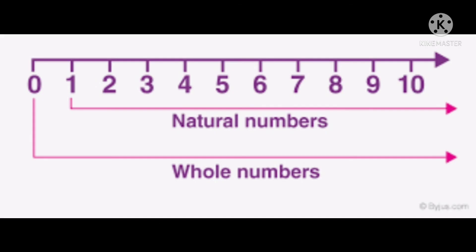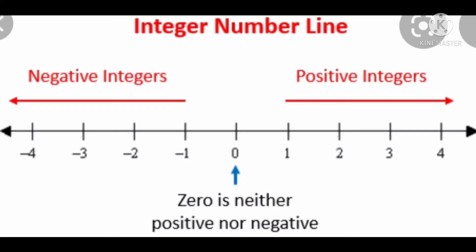Students, observe this picture. Whole numbers start with the number zero, one, two, three and so on, while natural numbers start with the number one, two, three and so on, just like in the picture. Next, we go to integers. This is the integer number line. Negative integers are to the left of zero, positive integers are to the right side of zero, and zero is neither negative nor positive.